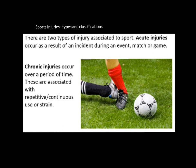This slide begins with a couple of very basic definitions. We've got acute injuries and chronic injuries. Acute injuries occur as a result of an incident during an event, match or game. The other phrase we use is immediate onset — meaning you can tell me exactly when that injury took place.